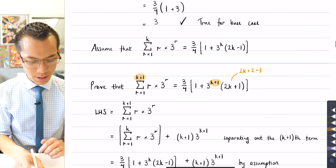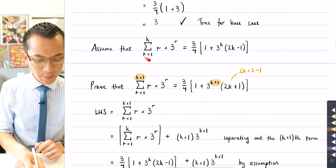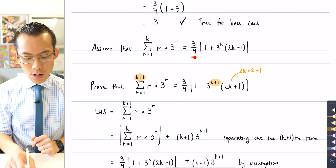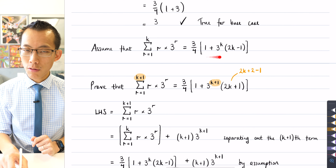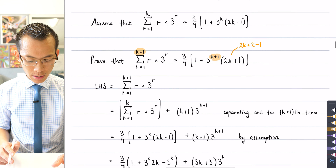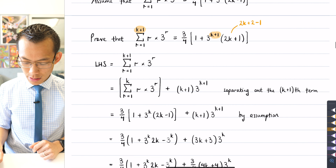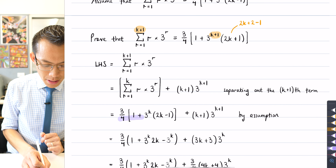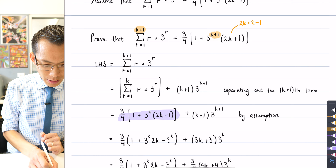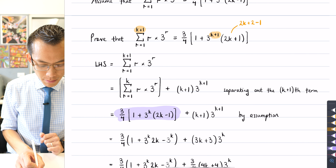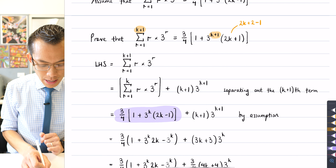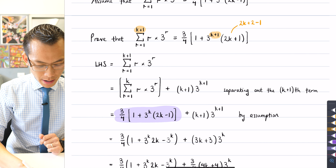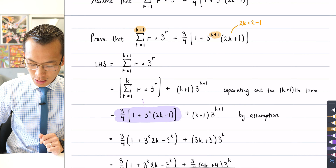That k plus 1th term is k plus 1 times 3 to the k plus 1. You can see me substituting k plus 1 into the sigma notation formula. The reason it's helpful to separate out the sigma notation up to k is because that's exactly what I had in my assumption — that the first k terms equals the expression on the right-hand side. That substitution replaces the sigma notation.